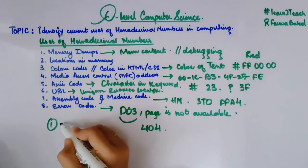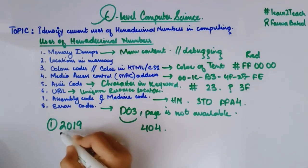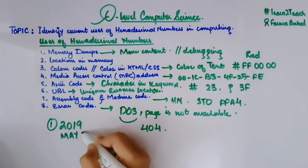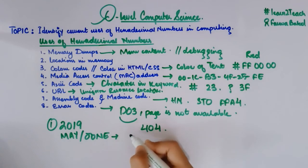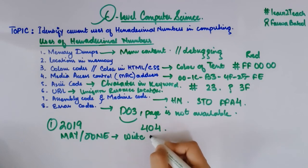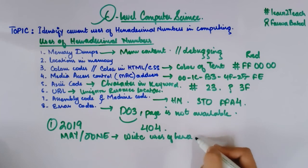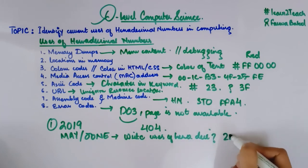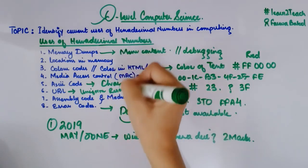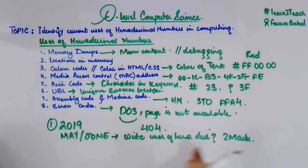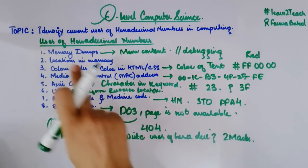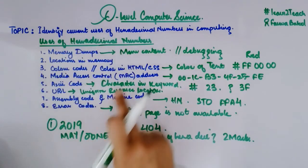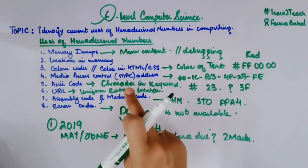One more thing — in the May/June 2019 past paper, a question arose where you need to write two uses of hexadecimals, and it is worth two marks. You can write any two of these uses. I have mentioned all the uses, so for attempting that past paper question from 2019, you just need to list down any two uses. It is important to remember all the uses of hexadecimal numbers because it is important from your exam point of view.